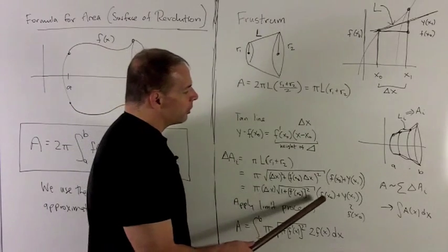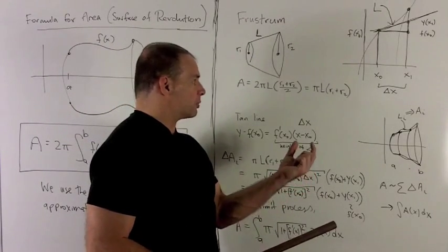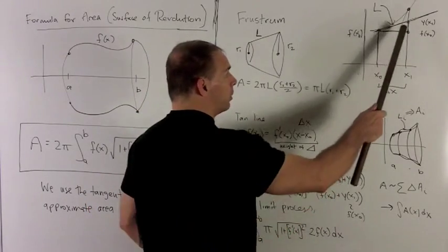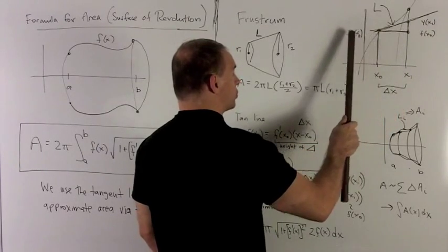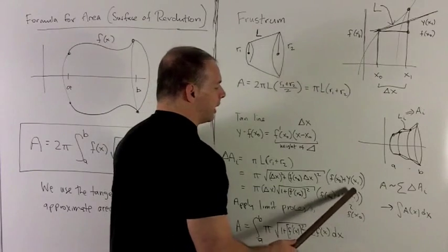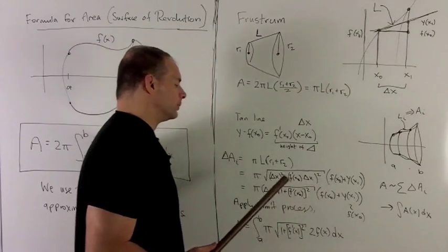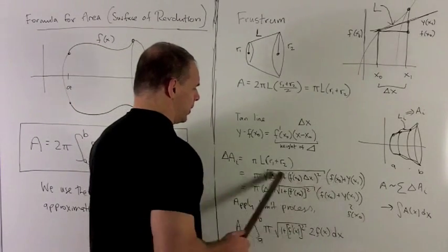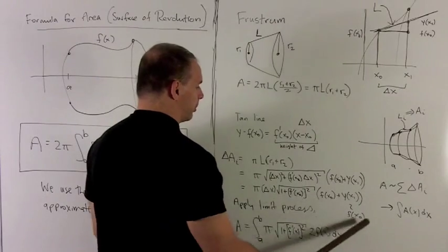As the base gets smaller and smaller and x₁ gets closer to x₀, y(x₁) gets closer and closer to f(x₀). So in the approximation, I can replace y(x₁) with f(x₀). Now I'm close to an actual formula — let's see what happens with the limiting process.